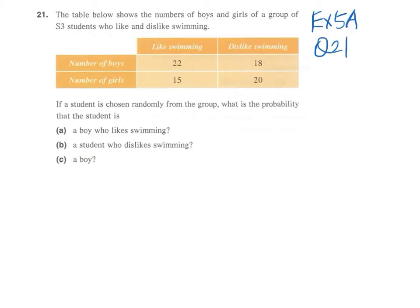...a boy who likes swimming? For part (a), we have a boy who likes swimming. The total number of possible outcomes will be the sum of all these four numbers.